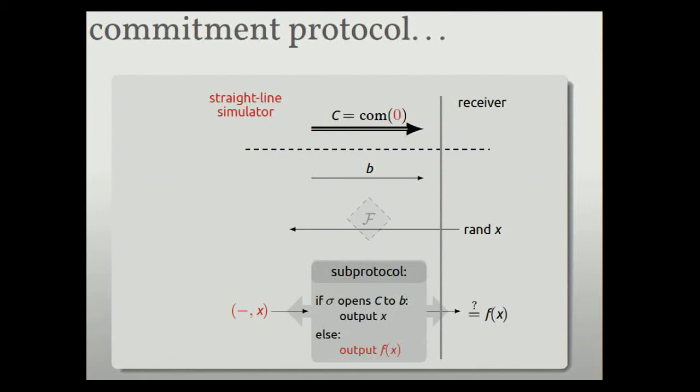What if it's a cheating sender? So a sender commits to one minus b and then tries to open the commitment to b. That's the problem of binding. So what happens here? Well, we can argue from the properties of the standalone commitment that this first statement here can never be achieved, right? If it's a statistically binding commitment protocol, you can never find a sigma that does this. So I've crossed it off. And so what we have in the sub protocol, if I cross off that first if statement, I just have this, right? Which is whatever the sender gives as input to this sub protocol, we apply f to it and give it to the receiver, okay? But a cheating sender would have to come up, right? This is looking similar maybe, right? The cheating sender would have to come up with a z, which is a preimage of f of x. You'd have to invert this one-way function and that can't happen.